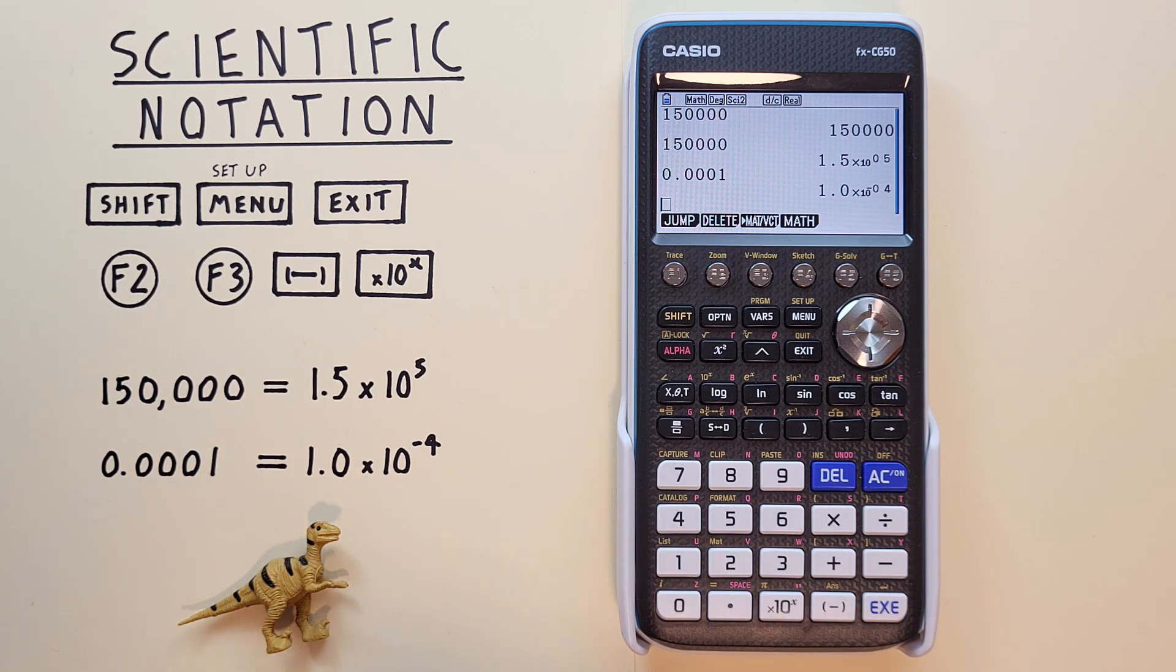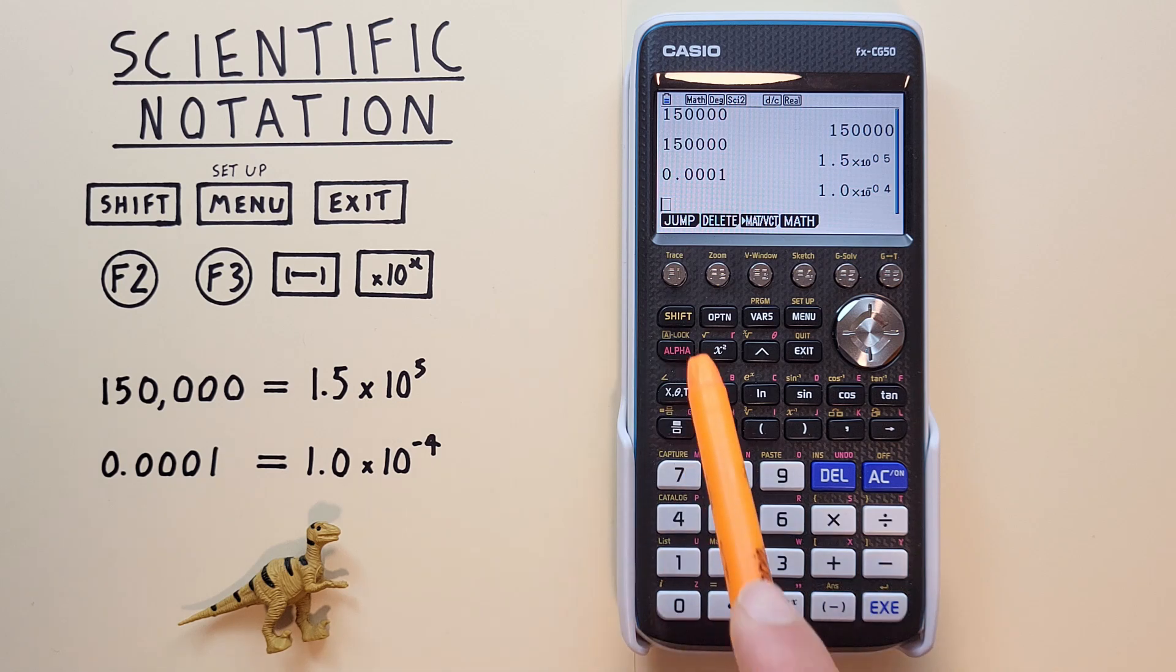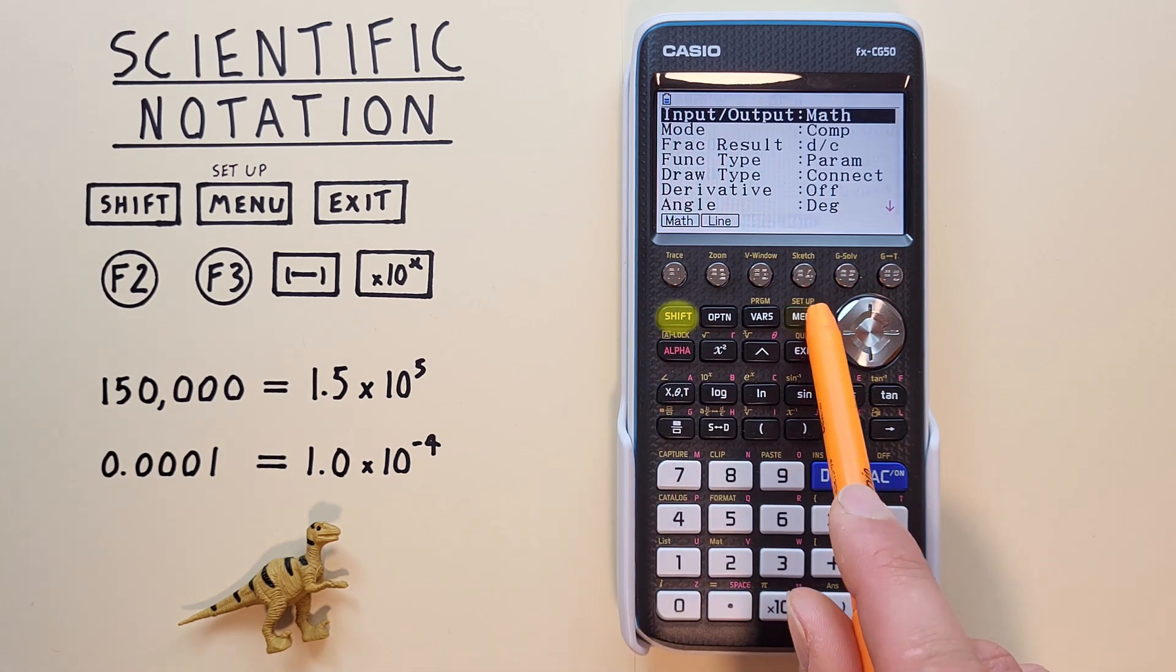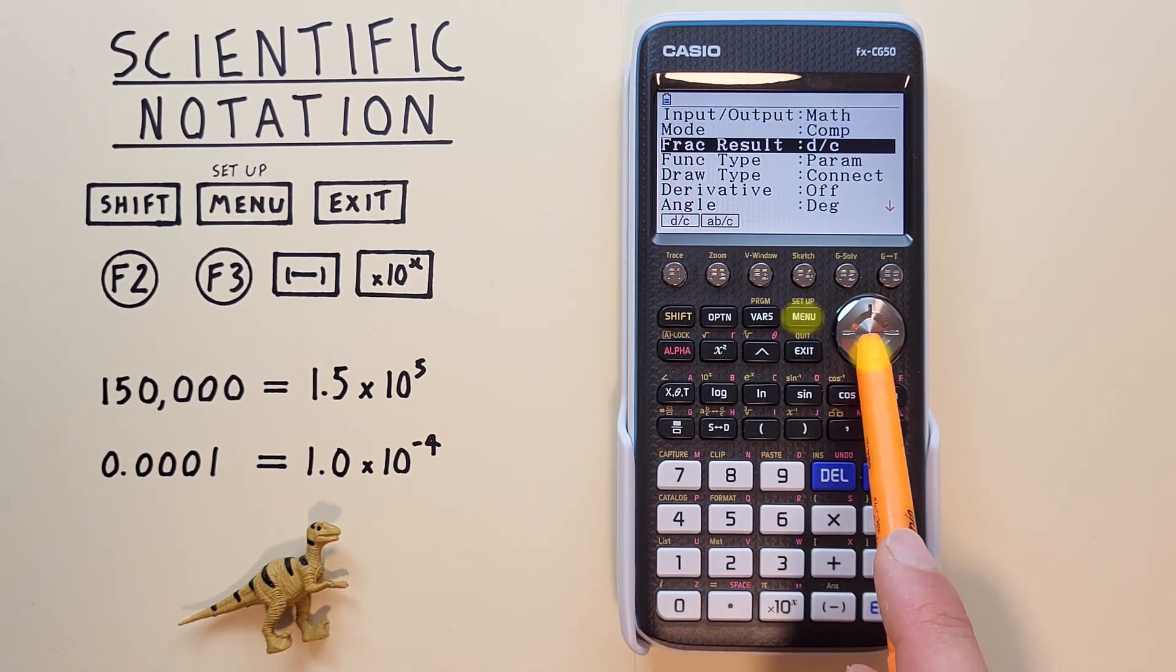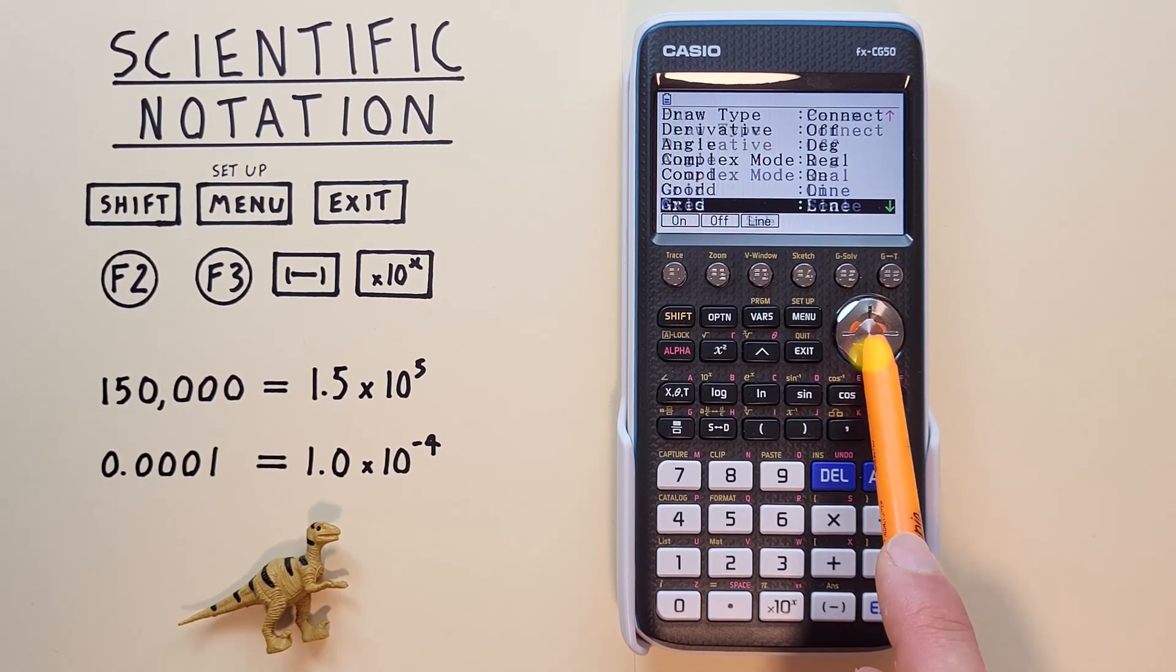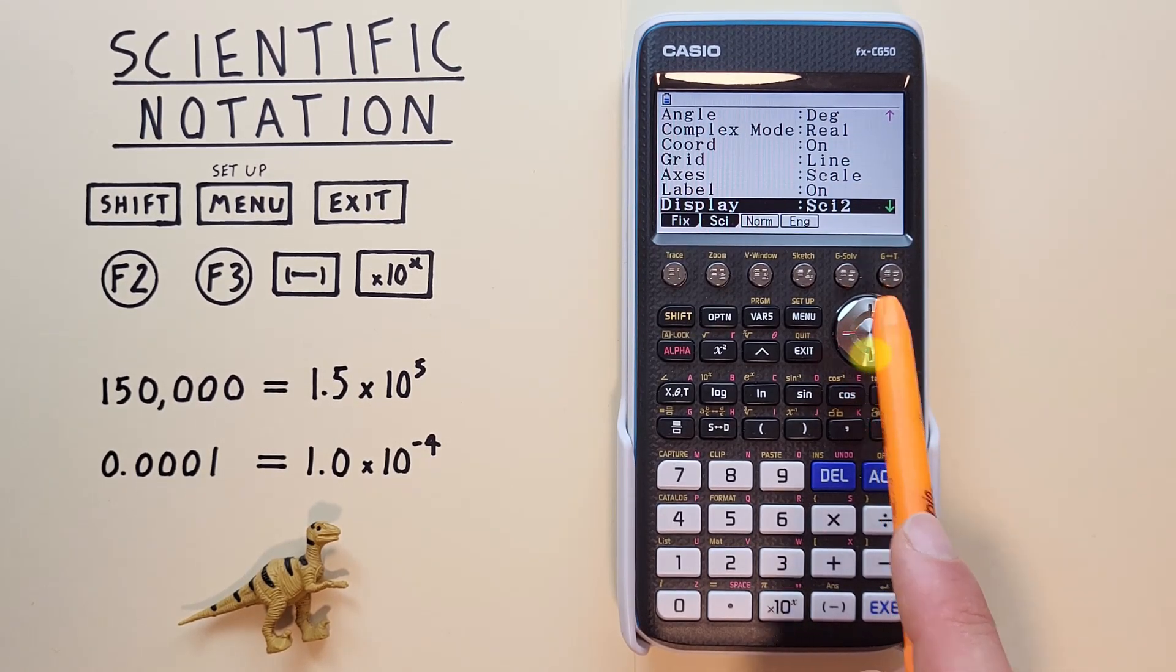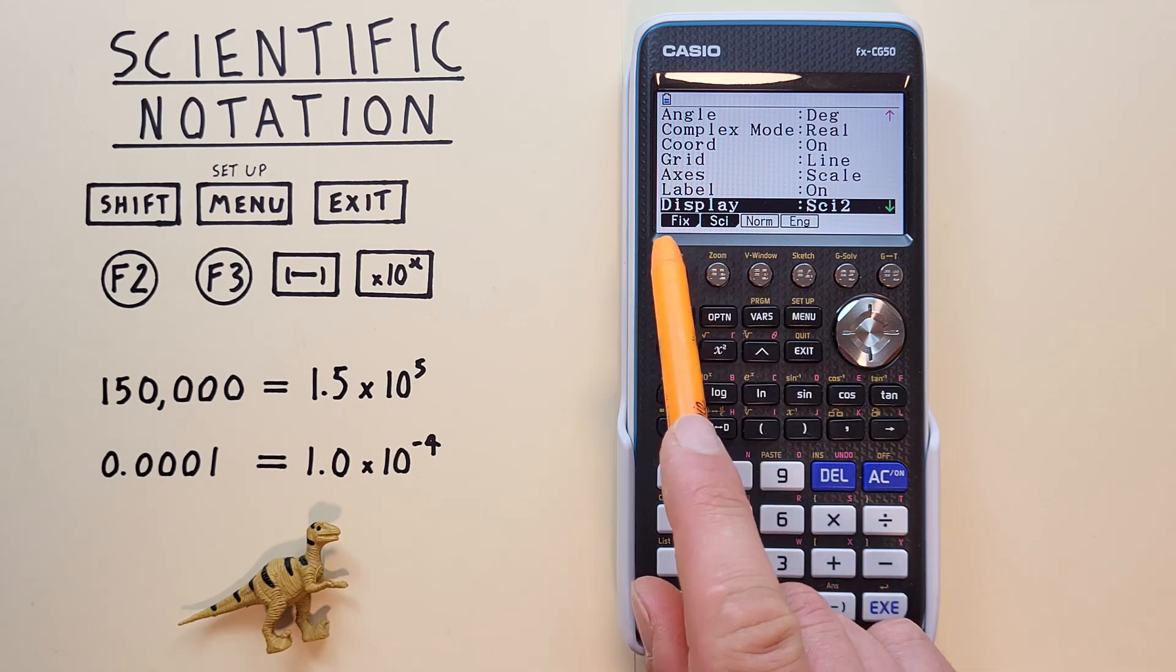If we're done using scientific notation and want to go back to our normal mode, again we do this with the Shift Menu key, and scroll down to our display option.